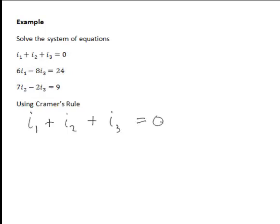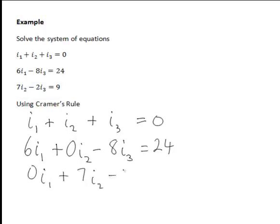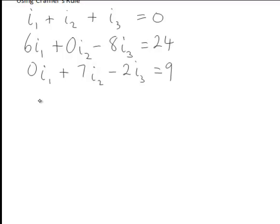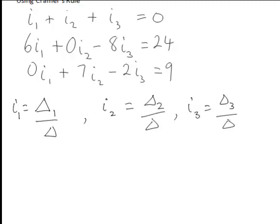The first equation is i1 plus i2 plus i3 equals 0. The second one is written 6i1 plus 0i2 minus 8i3 equals 24 and the third one is 0i1 plus 7i2 minus 2i3 equals 9. So i1 will be delta1 divided by delta, i2 will be delta2 over delta and i3 will be delta3 divided by delta.